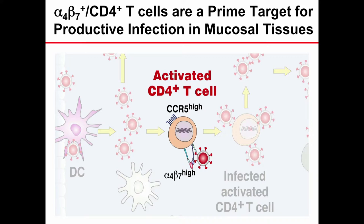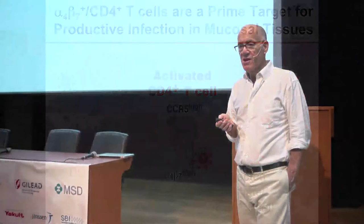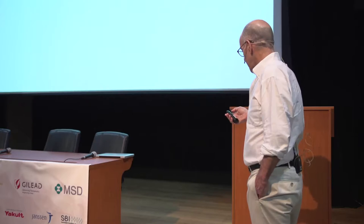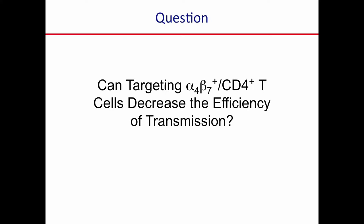With that in mind, what we're thinking is that what seems to be required is that if the virus interacts with one of these cells that expresses alpha 4 beta 7, its chances of establishing infection are greater, primarily because these cells tend to be activated. If a virus encounters a CD4-positive T cell that's not activated, in all likelihood it can bind, fuse, and enter that cell, but it's not going to go very far because the cell is not itself dividing or proliferating.